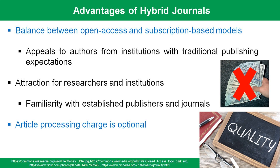Hybrid journals strike a balance between open access and subscription-based models. Authors benefit from the prestige of publishing in well-established journals, while readers can access specific articles without a subscription. For publishers, hybrid journals provide a potential revenue stream through a combination of subscription fees and article processing charges for open access articles. This dual-income model supports sustainability and allows publishers to adapt to changing trends in scholarly communication.